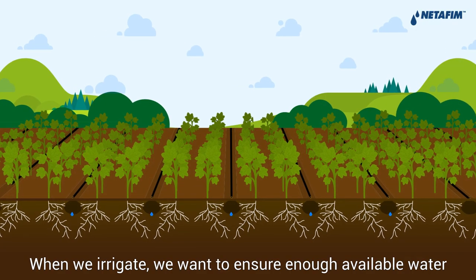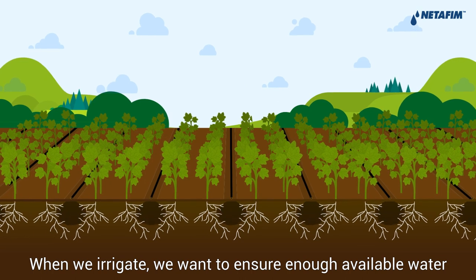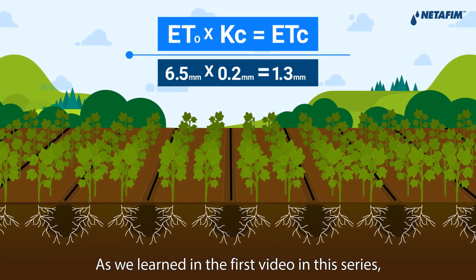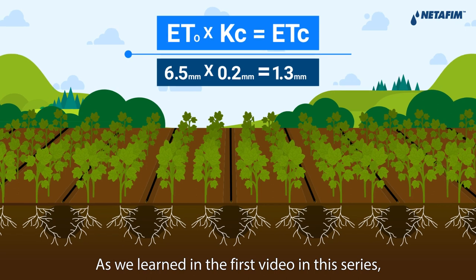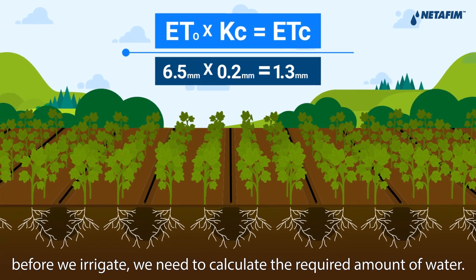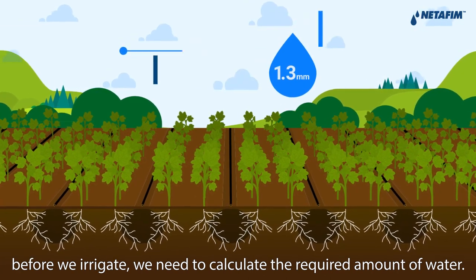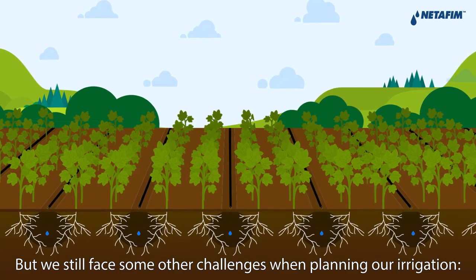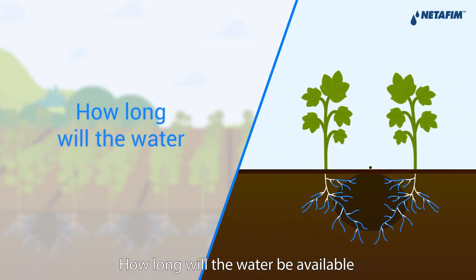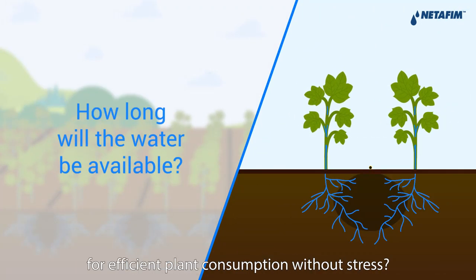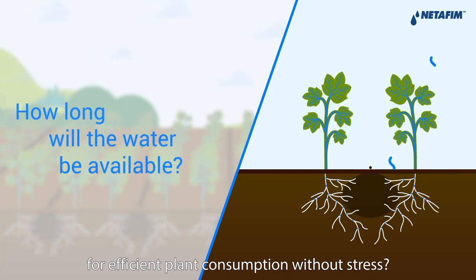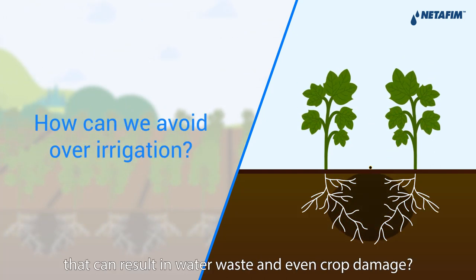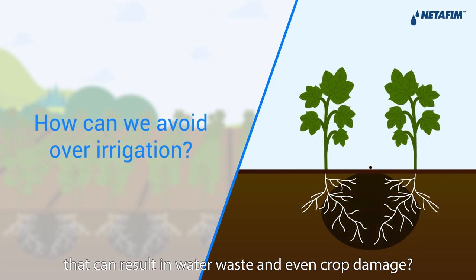When we irrigate, we want to ensure enough available water in the soil for plant consumption. As we learned in the first video in this series, before we irrigate, we need to calculate the required amount of water. But we still face other challenges when planning our irrigation: how long will the water be available for efficient plant consumption without stress, and how can we avoid over-irrigation that can result in water waste or even crop damage?